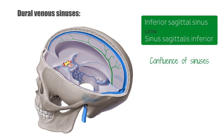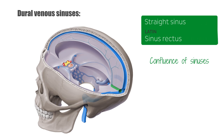The inferior sagittal sinus, in green, runs within the lower free margin of the Falx cerebri and drains to the straight sinus, now highlighted. The straight sinus runs along the attachment of the Falx cerebri to the tentorium cerebelli, and it also drains to the confluence of sinuses.